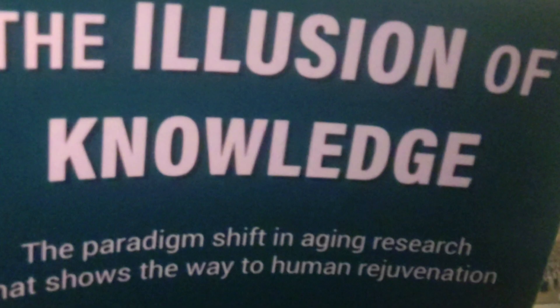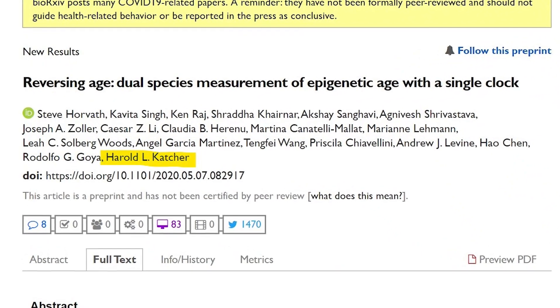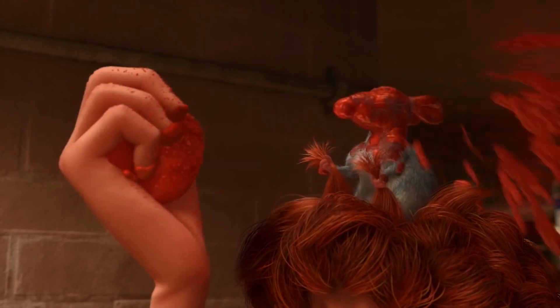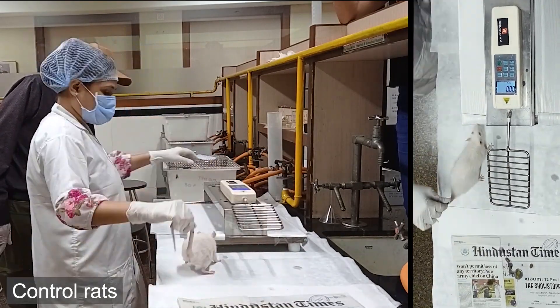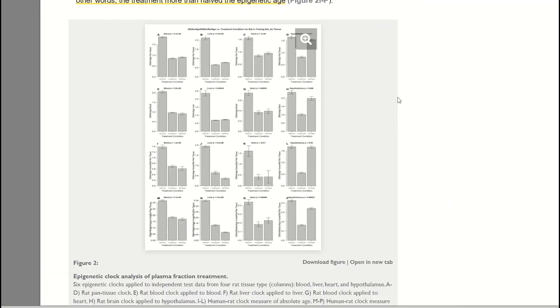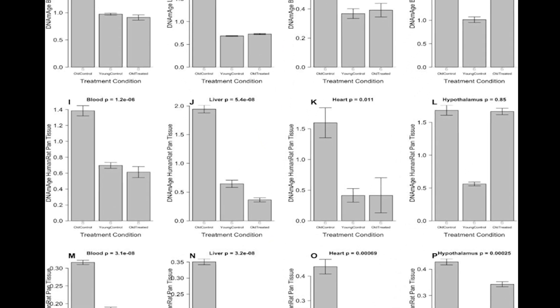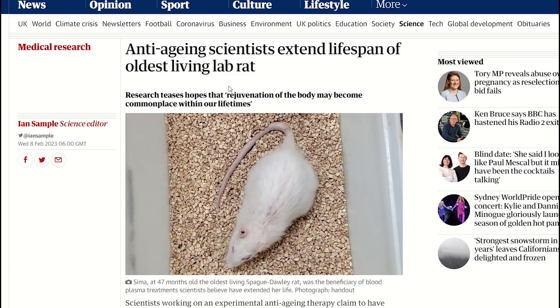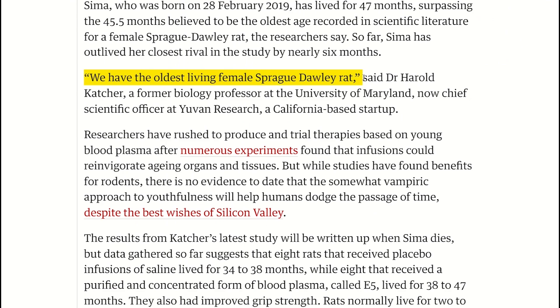Following these injections many measurements were made, many of which are described in Katcher's book, The Illusion of Knowledge. And in my previous video I tried to elucidate these claims and we saw some videos showing that these treated old rats seem to have better grip strength and some other preliminary data suggesting that this E5 injection was reducing the DNA methylation age, a proxy that's used for biological age, with one of the female rats, Seema, at the time of me making that previous video, being the longest-lived Sprague-Dawley rat.